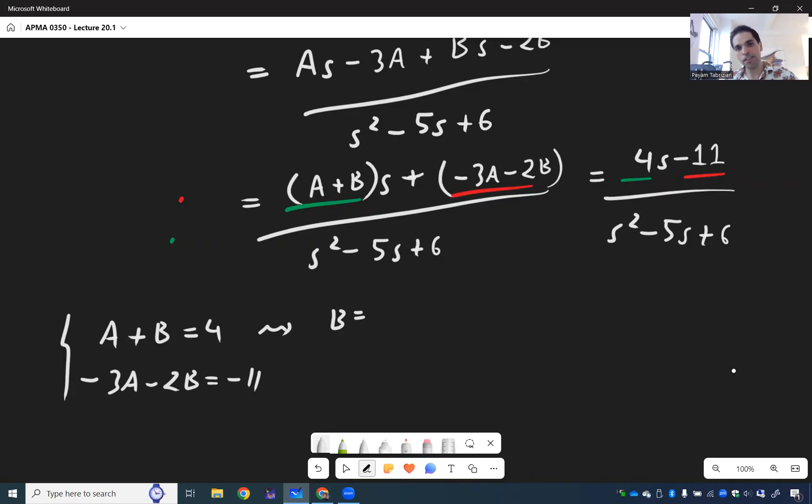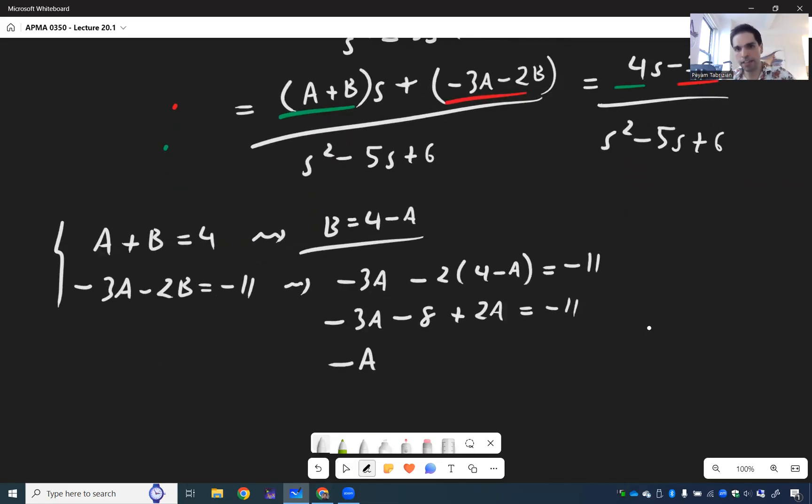And again, here, we'll guide you through the algebra. So b is 4 minus a. And then you get minus 3a minus 2 times 4 minus a equals minus 11. So minus 3a minus 8 plus 2a is minus 11. So I think we get minus a minus 8 is minus 11. So minus a is minus 3. So a equals 3. On the one hand. And then b is 4 minus 3, it's 1. So b equals 1.